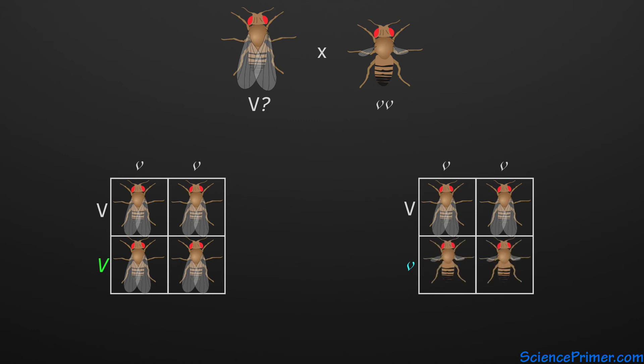While the Punnett square only displays the predicted patterns, the beauty of working with organisms like peas and fruit flies is that they are easy to breed, have relatively short generation times, and produce many offspring each time they are crossed. So by actually performing the cross, we can determine the genotype of the wild-type parent.